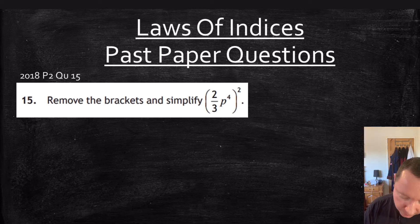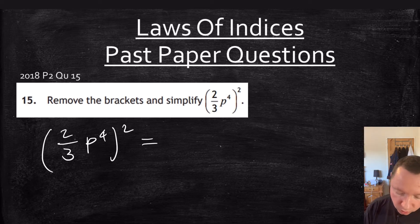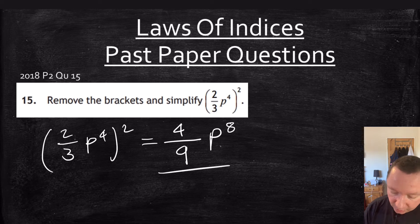So we've got 2 thirds p to the 4 all squared. I need to square my fraction. So 2 twos is 4 over 3 threes is 9, and p, we times the powers: 4 times 2 makes 8. And we're done there.